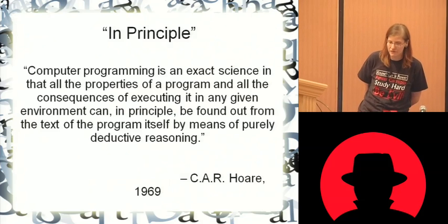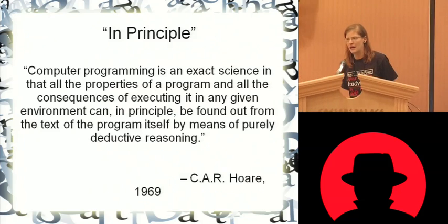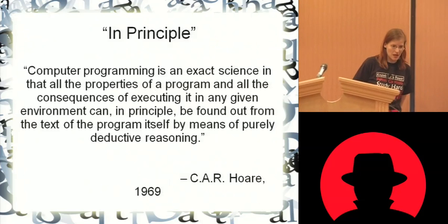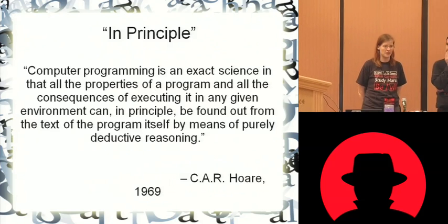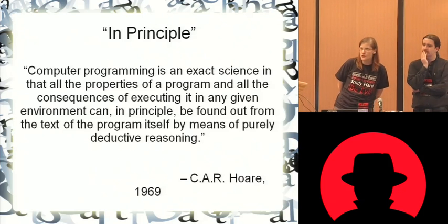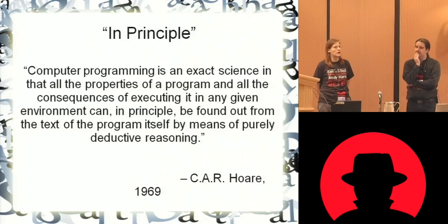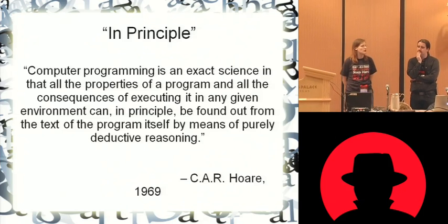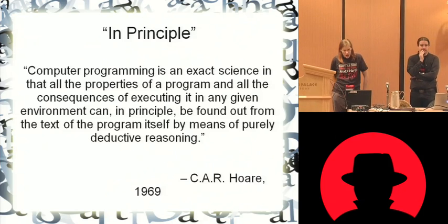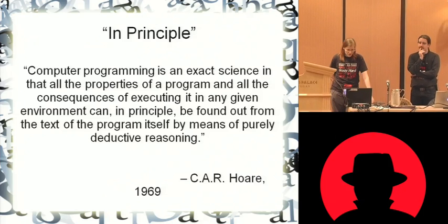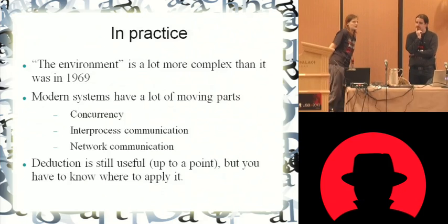So, the fellow who said this — Tony Hoare — you might have heard of an algorithm he wrote called Quicksort. He was one of the fathers of computer science. And this is from a paper that he wrote about correctness proofs of computer programs. However, things have changed pretty considerably between 1969 and today.